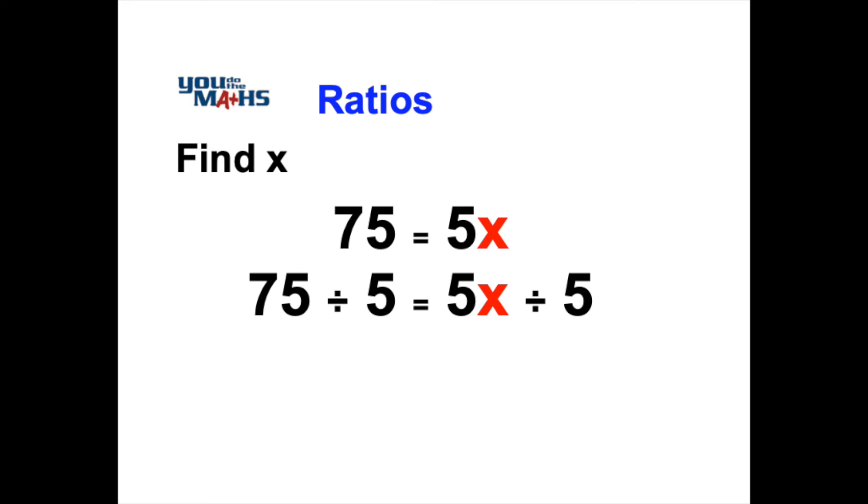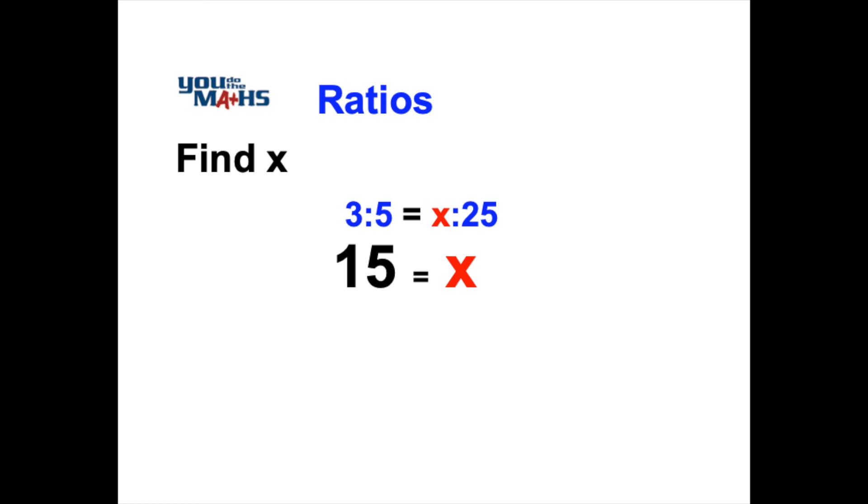So 5x divided by 5 removes the 5 leaving just x, and 75 divided by 5 is 15. So in the original ratio, 3 over 5 or 3 to 5 is equal to 15 to 25.